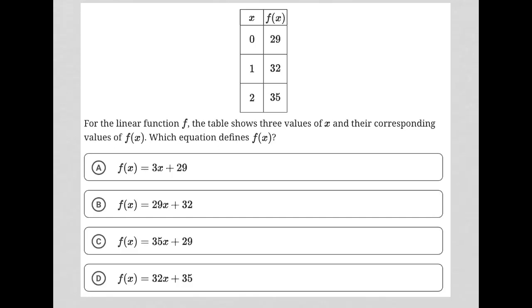This question is a diagram question. We have a table here with x and f(x), showing ordered pairs at x equals 0, 1, and 2. The question states: for the linear function, the table shows three values of x and their corresponding values of f(x). Which equation defines f(x)?